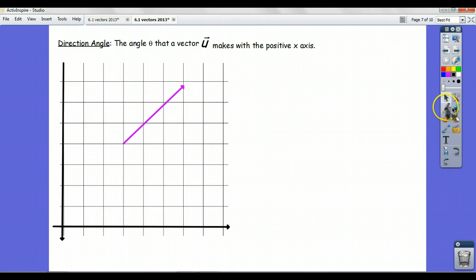But another way to describe direction, as we should all know, is using angles. The direction angle of a vector is defined to be the angle theta that a vector u makes with the positive x-axis.